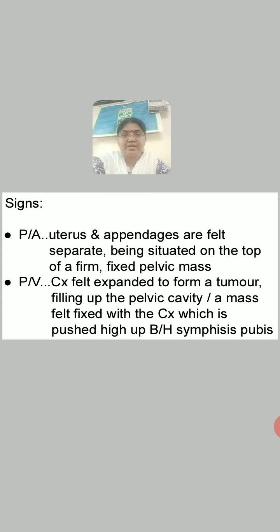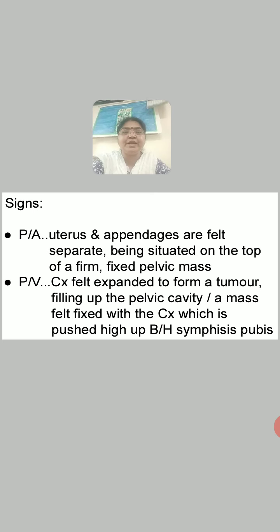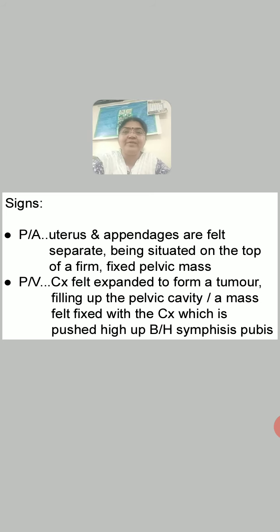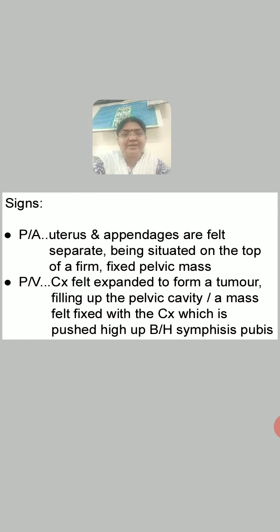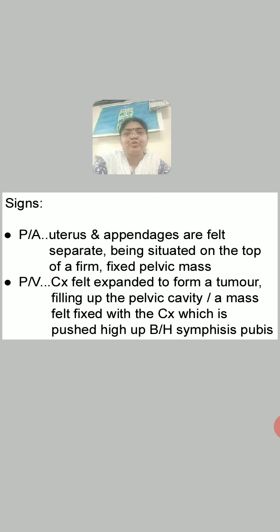For signs, on per abdominal examination, the uterus and appendages are felt separate, being situated on top of a firm, fixed pelvic mass. On per vaginal examination, the cervix is filled and expanded to form a tumor; it fills up the pelvic cavity, or a mass is felt which is fixed, with the cervix pushed high up behind the symphysis pubis.